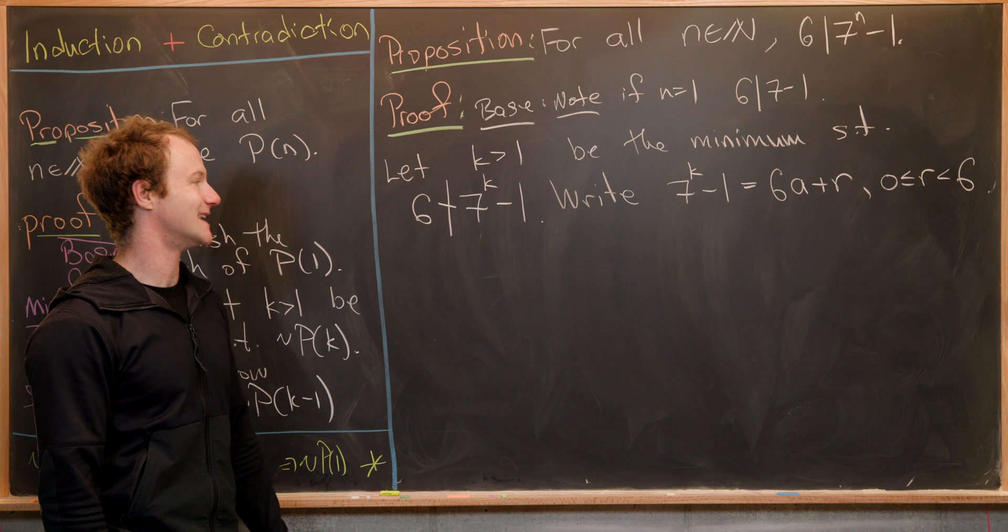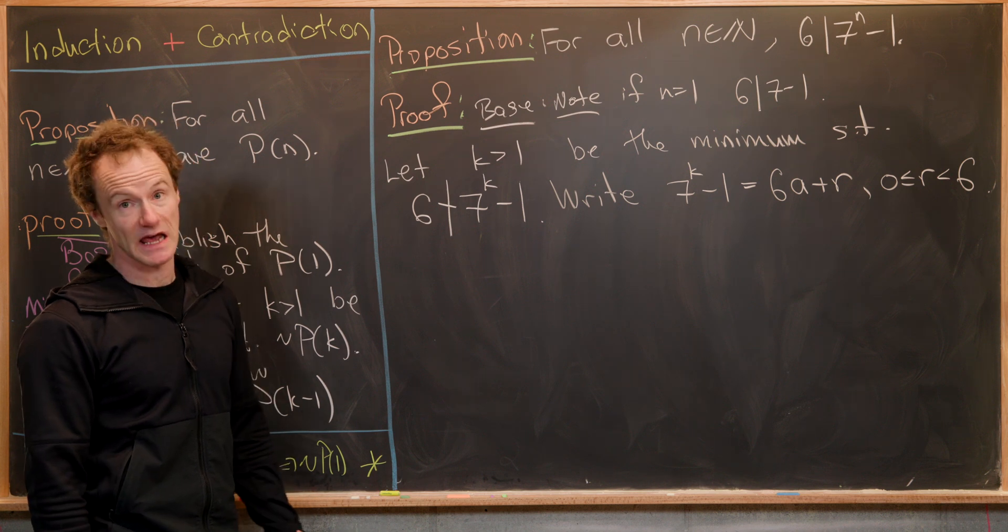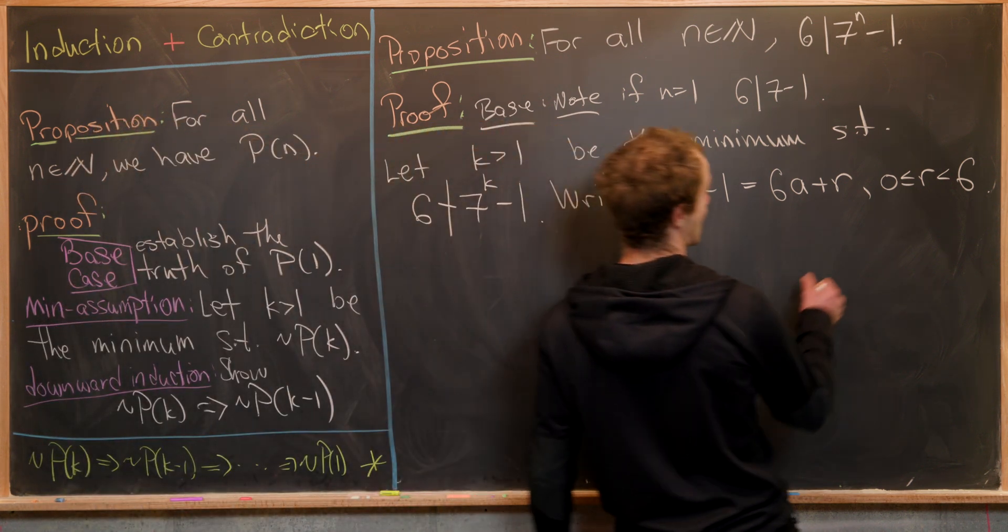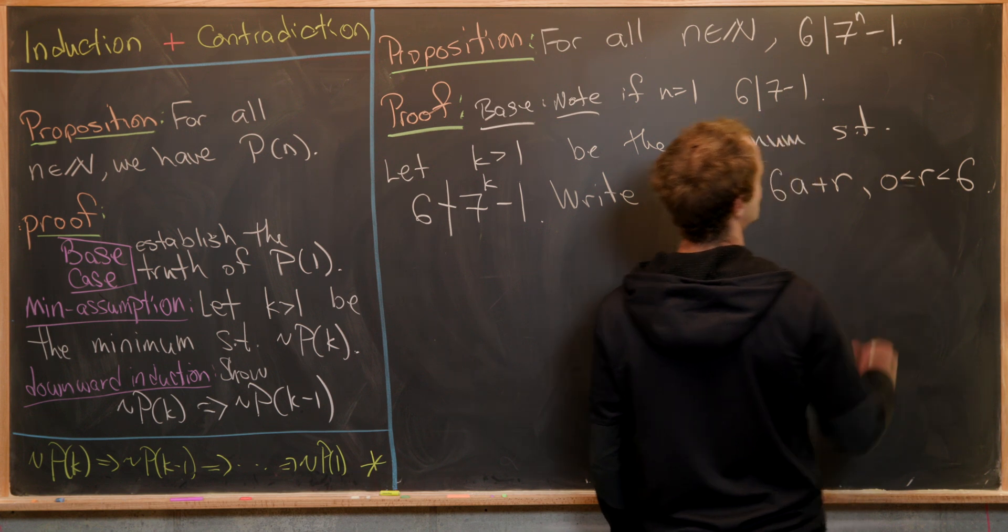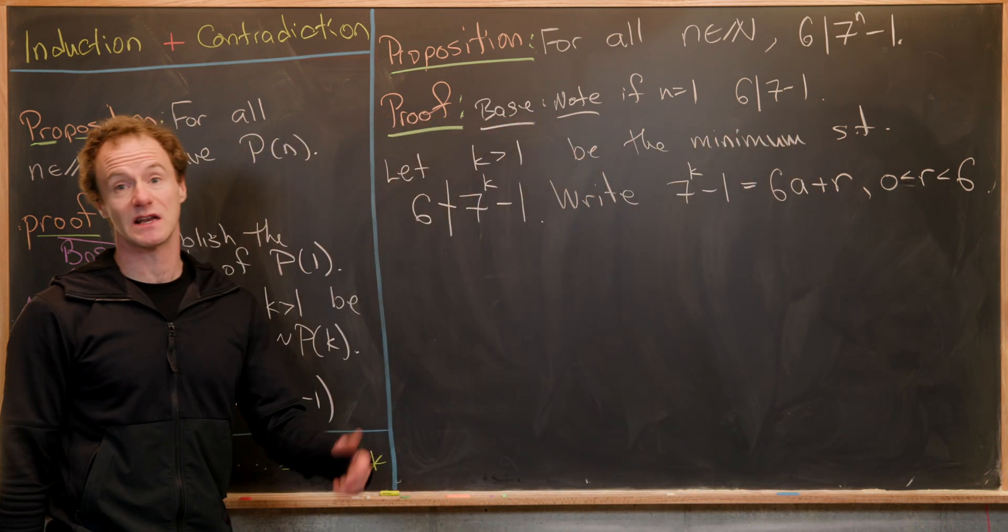Furthermore, because six does not divide seven to the k minus one by our minimality assumption, we know that this r has to be strictly bigger than zero. That's going to be important.